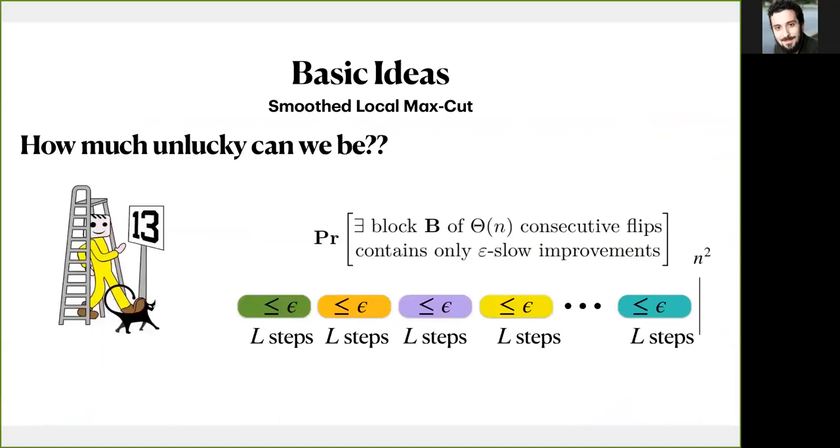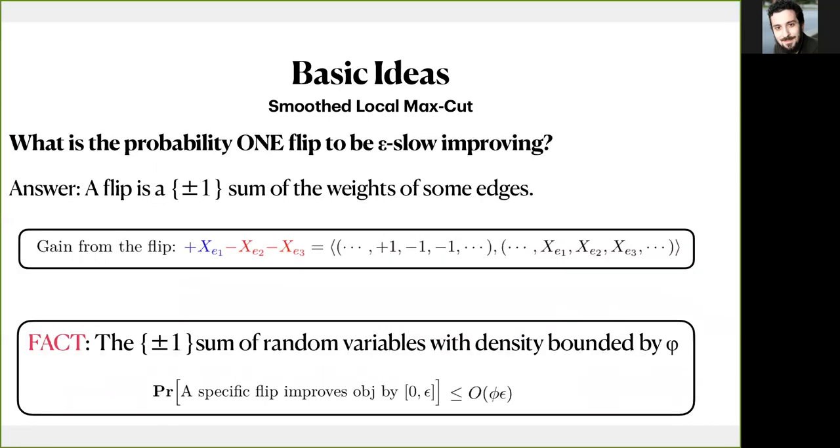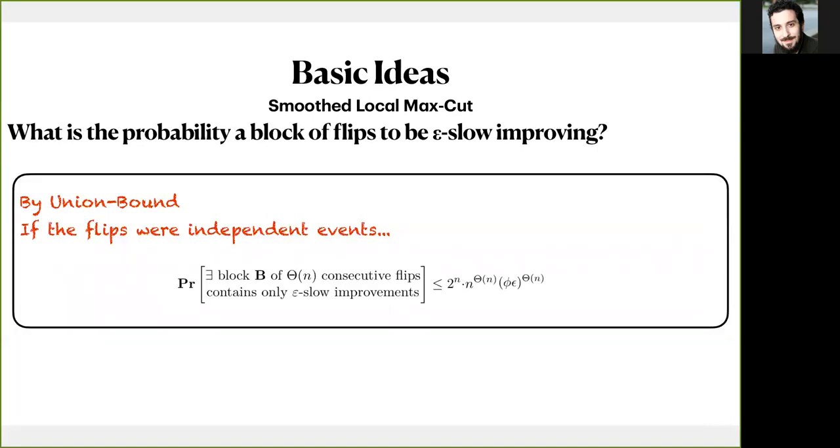So the real question here is how much unlikely could we be? What is the probability of existence of a block that contains only very small improvements? If that probability was small, then we were done. Let's start with the simple case, the case of just one flip. The probability to give very small improvement, let's say at most epsilon, is simple since the improvement from flipping a node is just minus plus sum of some random variables with bounded density. It is not difficult to see that this probability is at most order of epsilon. Now in the wonderland, if all the flips were independent events, then the probability of a bad block is just the product of the separated bad flips. Thus it is dropping exponentially, as you can see, to l. Notice again that we have to union bound also over all the initial configurations and the possible linear blocks.